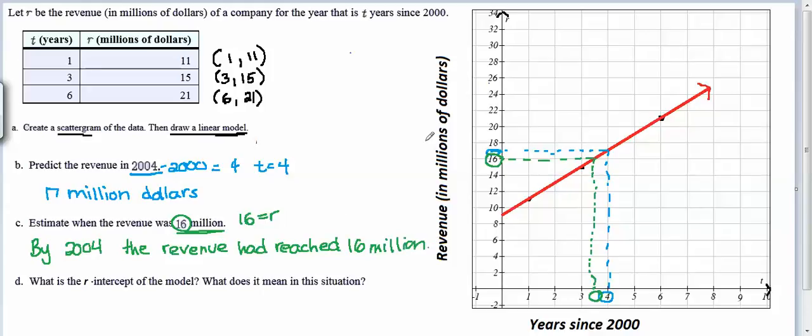And finally we're asked what is the r intercept of the model. When we think about the word intercept we're remembering that's the place where our line or our model intersects the r axis. The r axis is my vertical axis here. We can see they're intersecting at this point here right in between 10 and 9. So the r coordinate will be 9.